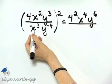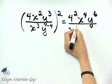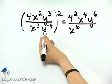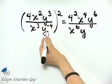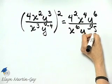And then in the denominator we have x cubed squared, 3 times 2 is 6. And then be careful, y raised to the power of negative 4 times 2, that is negative 8.